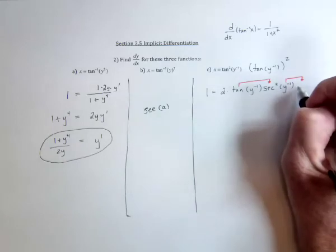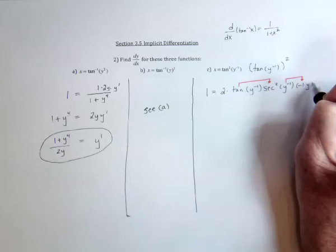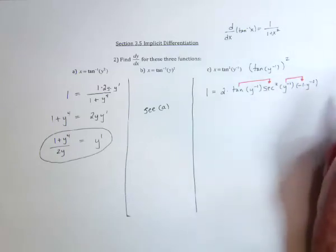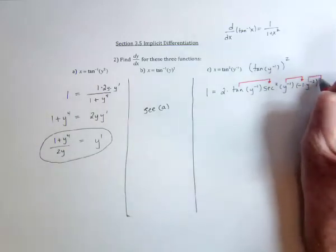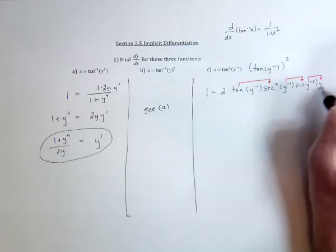So that's going to be negative 1 gets brought down, multiplied with y, and then subtract 1 from the exponent, so it's to the negative 2. And then the innermost function there was a y, so we need to take the derivative of y, which is y prime.